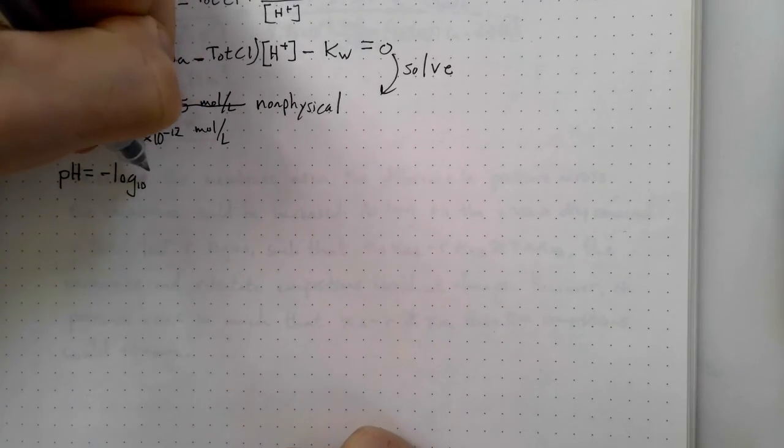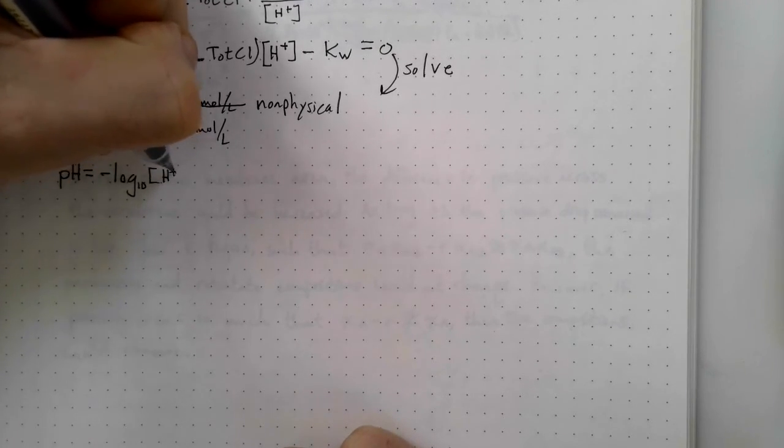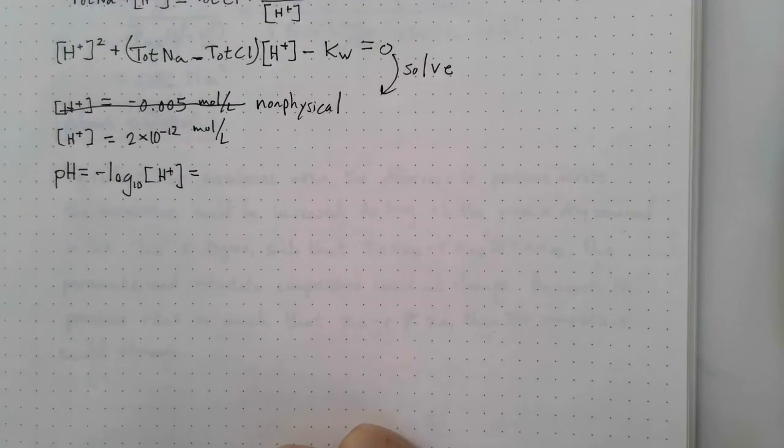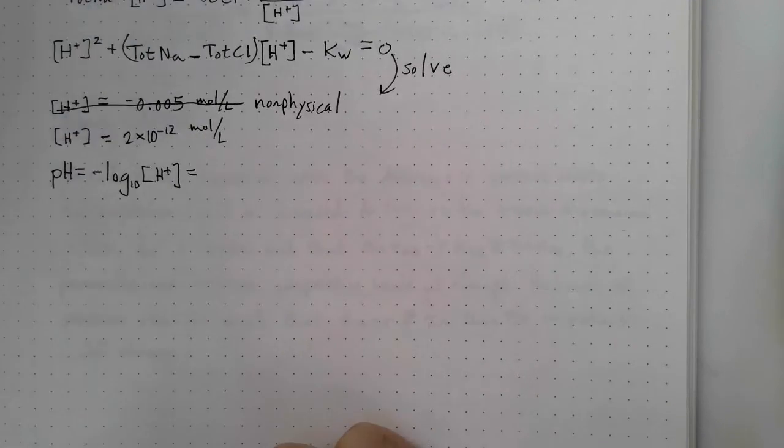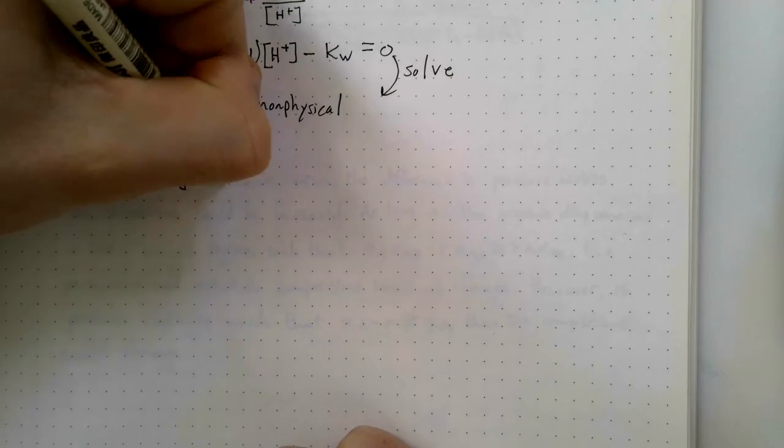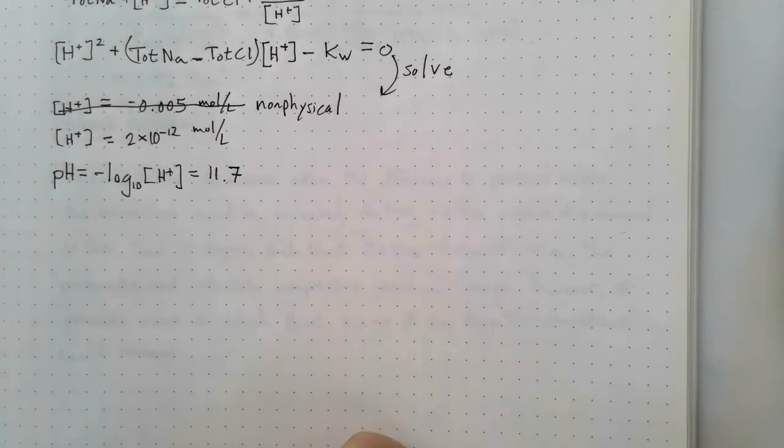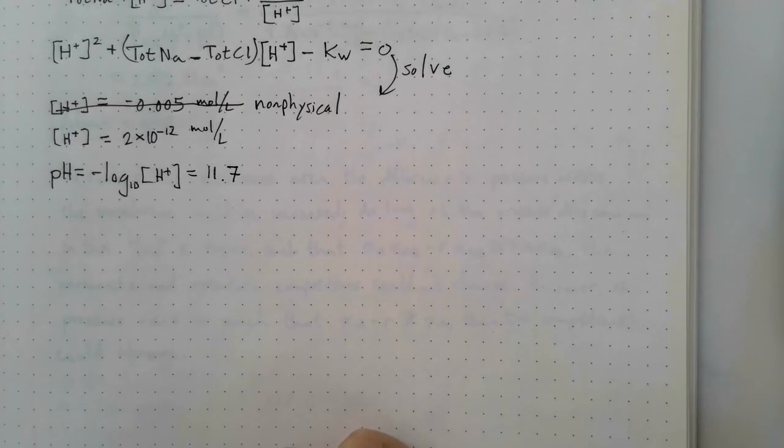To find the pH, we use the definition of pH, which is the negative log 10 of H plus concentration. And we find that the pH is 11.7. So now we're done.